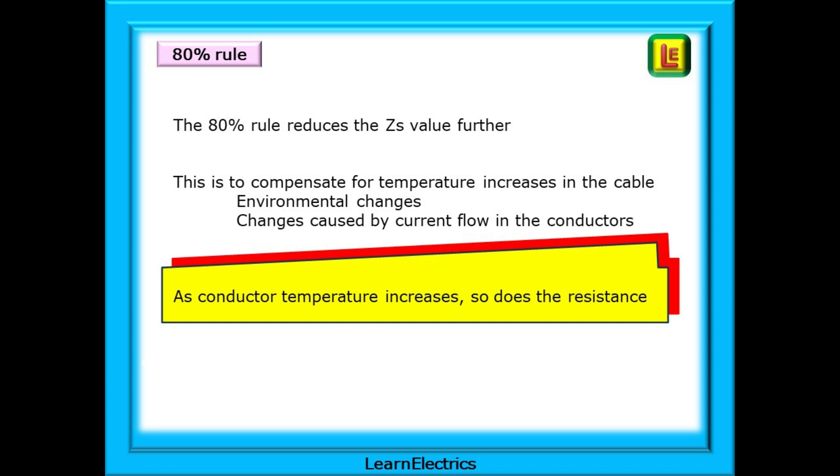This is because of an adjustment that we make and we call this adjustment the 80% rule. The 80% rule reduces the ZS value even further. This is to compensate for temperature increases in the cable such as environmental changes, grouping of cables or changes caused by current flow in the conductors. As the conductor temperature increases so does the resistance. If the resistance increases then the current goes the opposite way and decreases.